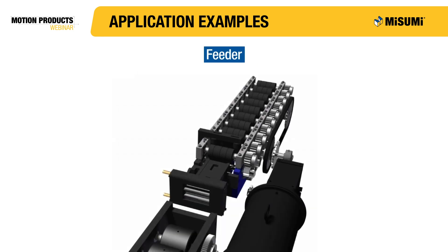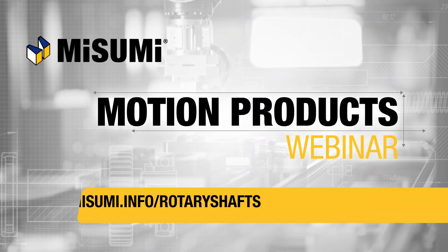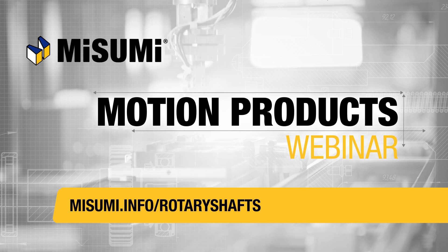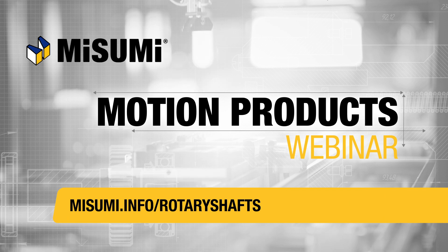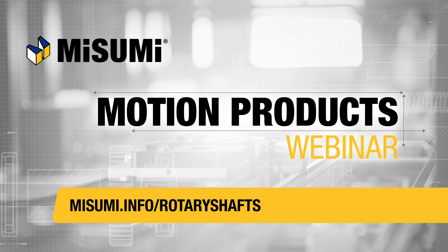The final application example is a feeder assembly, where rollers are driven by gears to feed product through the machine, with the drive transmitting motion through sprockets mounted on a rotary shaft. Thank you for watching the Misumi Motion Products webinar on rotary and drive shafts. Visit misumi.info/rotary-shafts to explore the full selection.